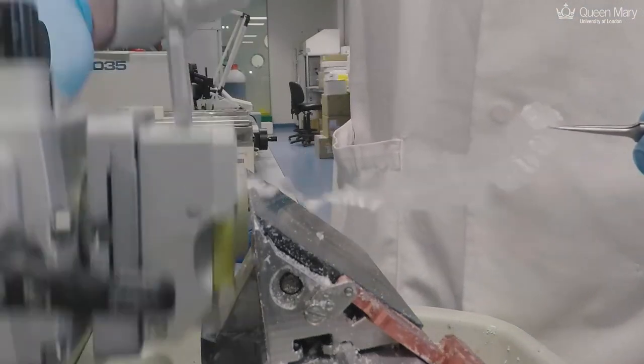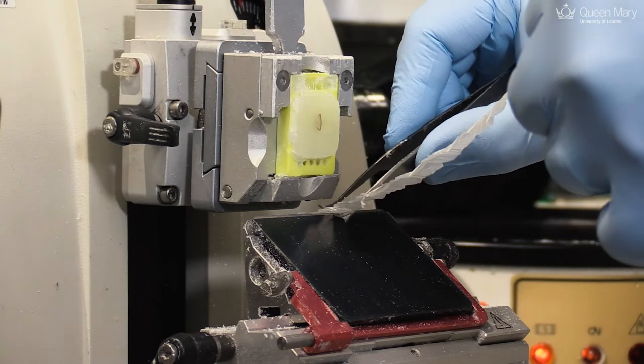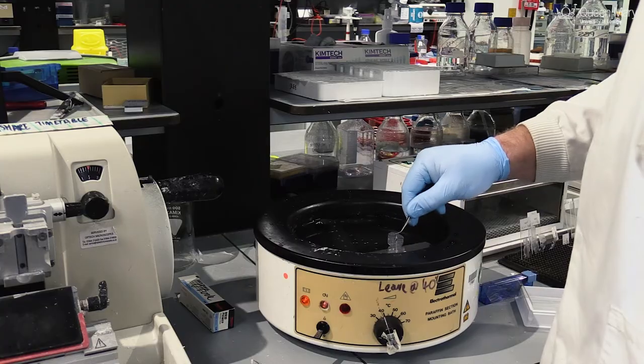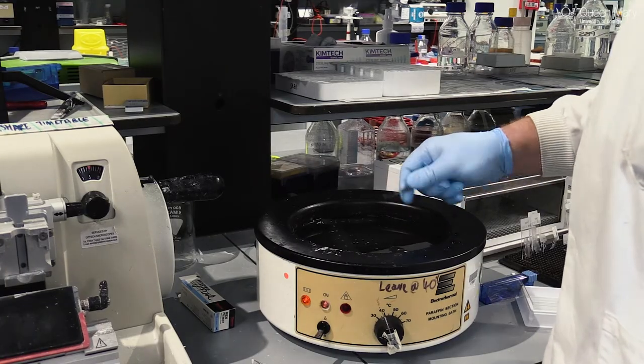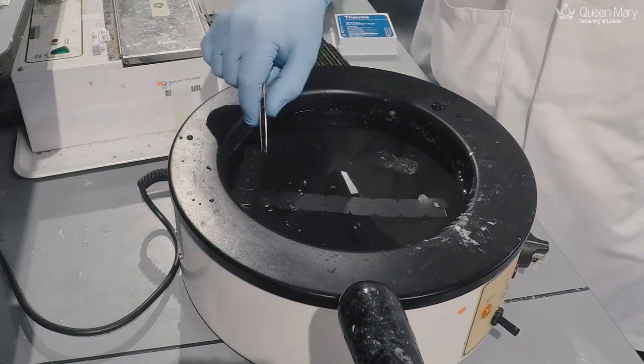So each one of these slices is 5 microns thick. We can then take them and float them on a warm water bath. This allows them to relax, to spread out, and allows us to mount them to microscope slides.